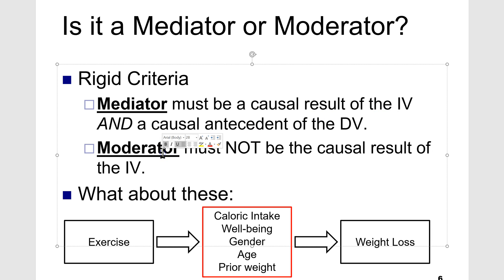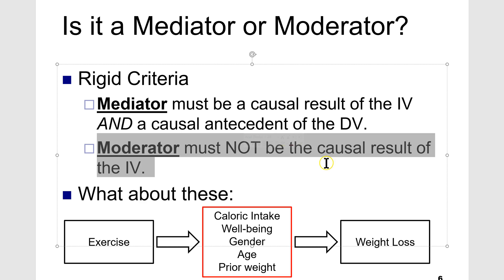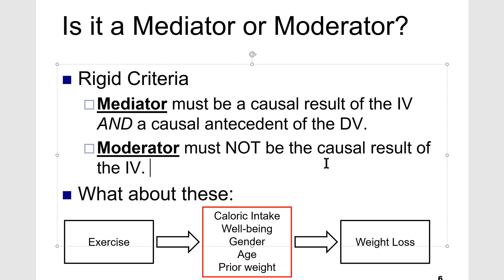Whereas with a moderator, the moderator must not be the causal result of the independent variable. If it is, then it's a mediator, not a moderator. So applying this rigid rule, let's look at the following here.